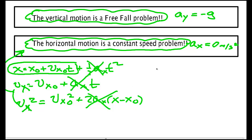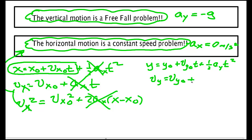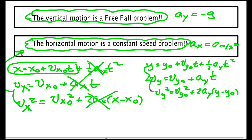Now the y direction: y equals y-naught plus vy-naught·t plus one-half·Ay·t². Then vy equals vy-naught plus Ay·t, and vy² equals vy-naught² plus 2Ay(y − y-naught). So we have our normal three equations for free fall, plus one more equation — sometimes known as the range equation — that tells you how far along x it goes if you know the time. Usually that x equation is used to solve for t, which is then plugged into the y equations.